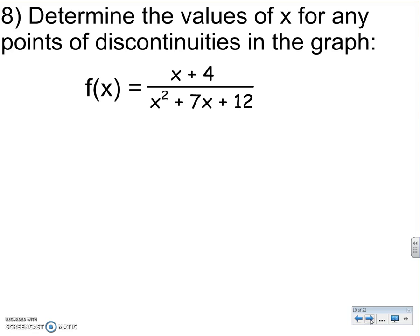Number 8, determine the values of x for any points of discontinuities in the graph. So again, a point of discontinuity, that's the hole. So here, we're looking for anything that cancels out. I see the rational function. I had to factor everything. The top, it's two terms, no GCF, stays the same because it's linear. That bottom, x squared plus 7x plus 12, three terms, no GCF. I had to do the x method.